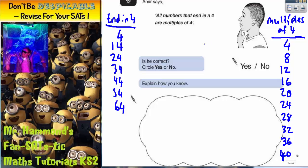Now all we need to do—he's saying that all the numbers that end in a 4 are multiples of 4. If we can just find one number that ends in a 4 that isn't a multiple of 4, then we prove that he isn't correct because he's saying all of them are. So let's start checking the list.